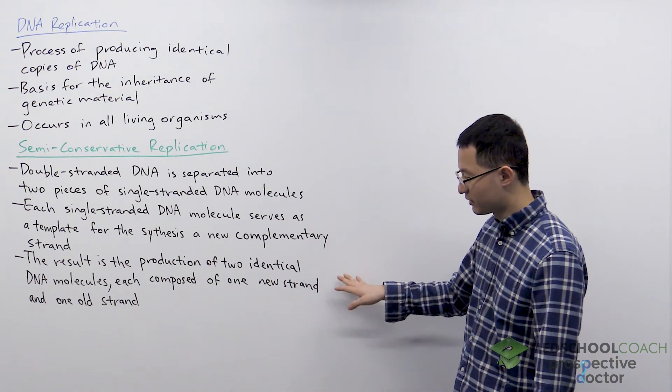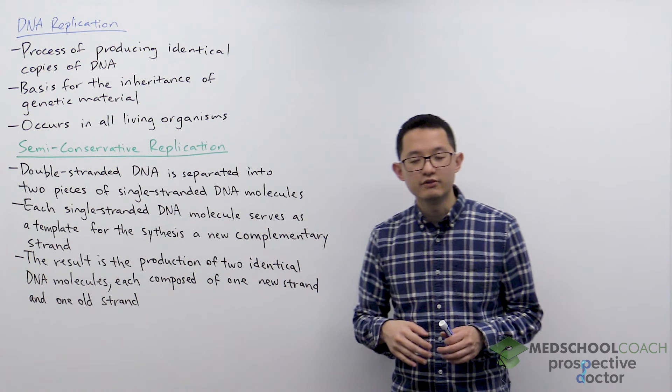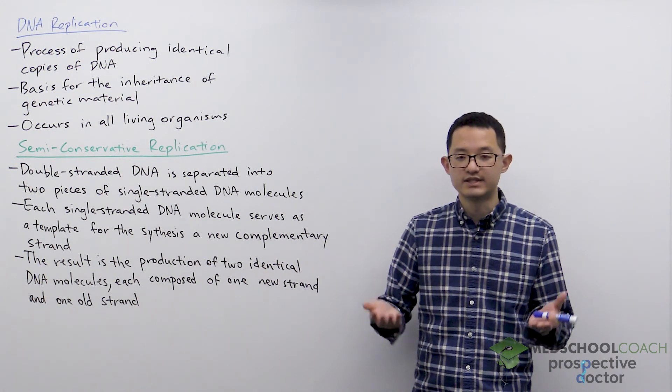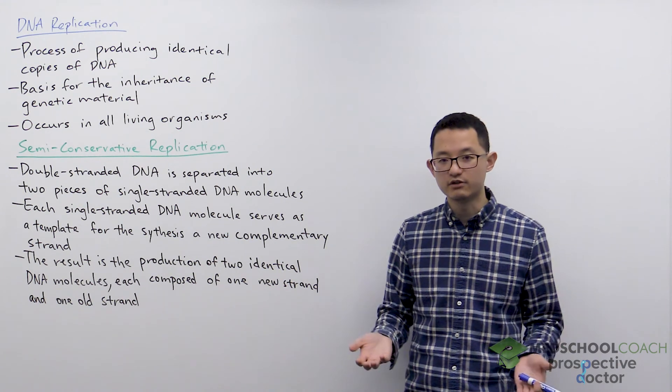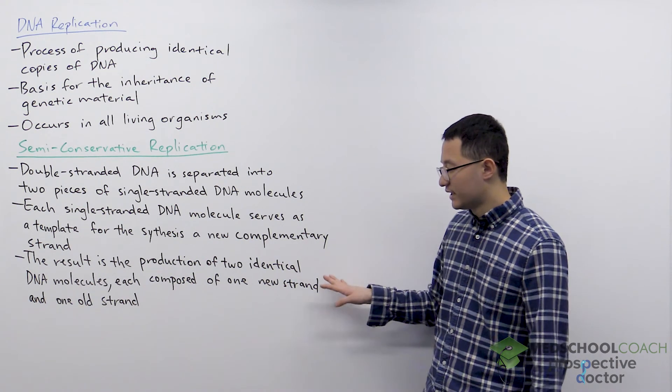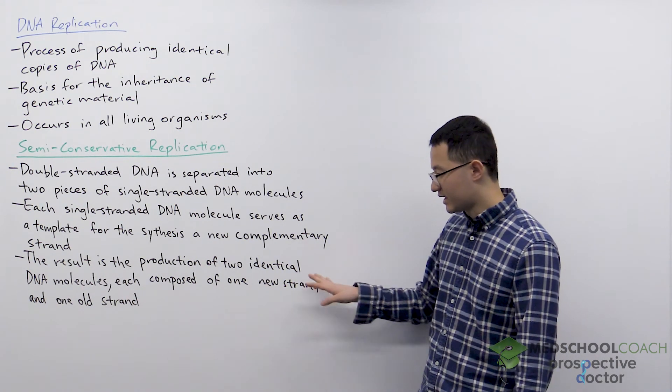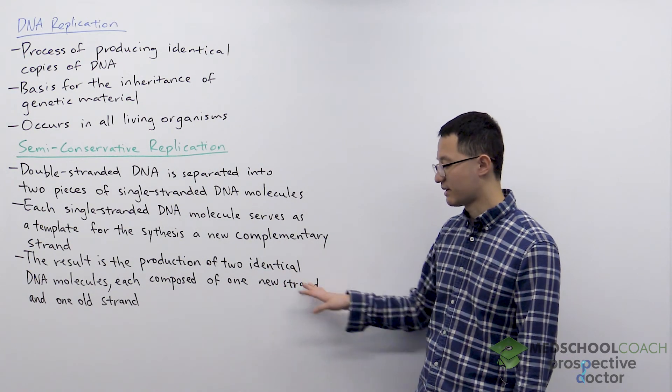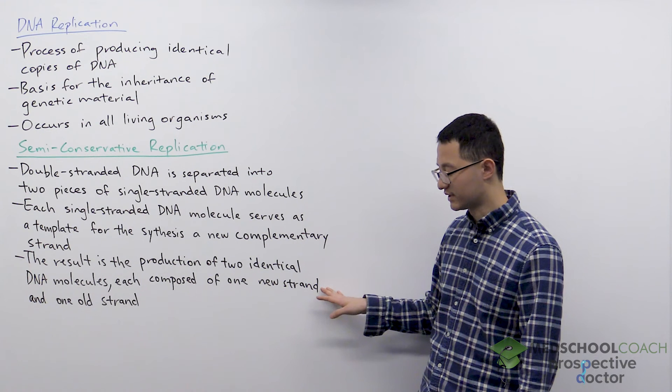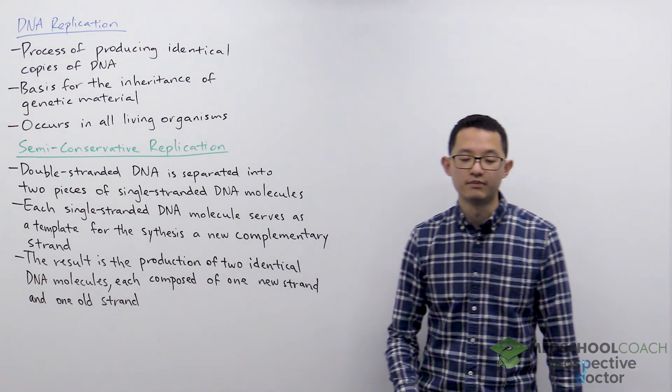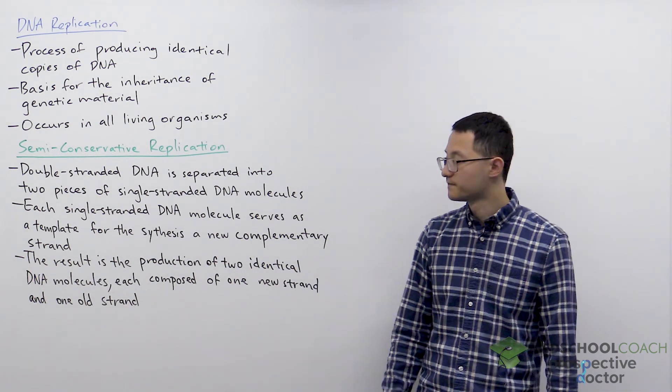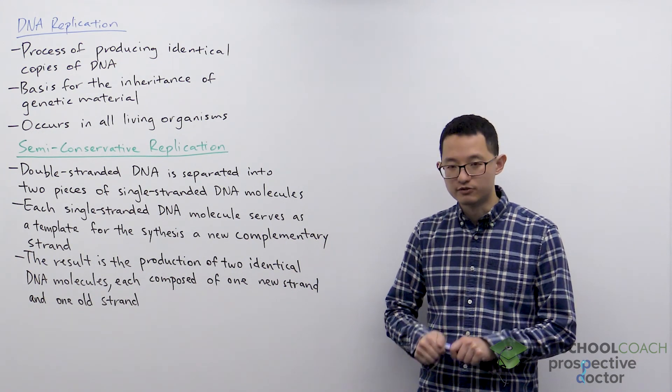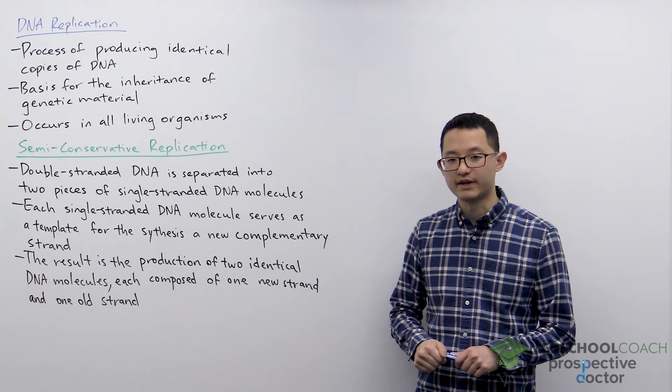And through this approach, the result is you do end up with two identical DNA molecules in that they have the same exact sequence of nucleotides. If you look at each of the DNA molecules that are produced, they're half new, half old. That means one of the strands is newly synthesized and the other strand is from the original DNA molecule. So this is semi-conservative replication, which you do want to be familiar with for the MCAT.